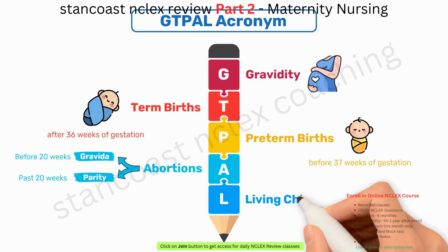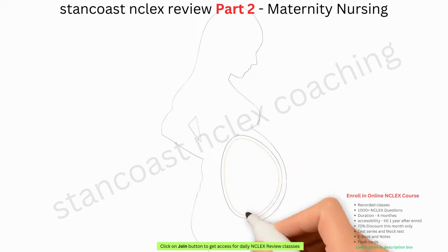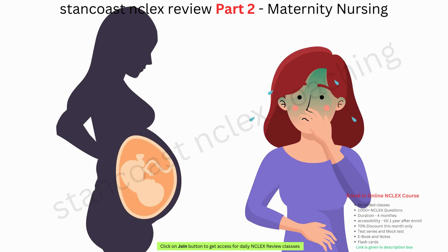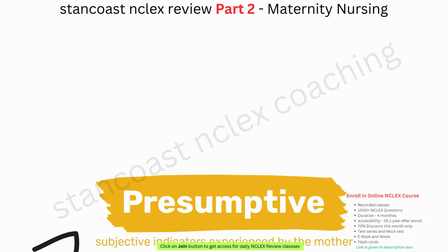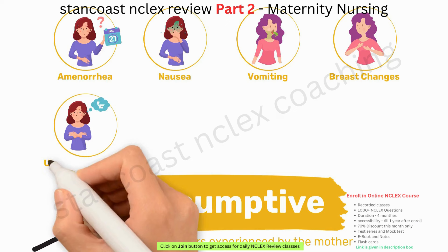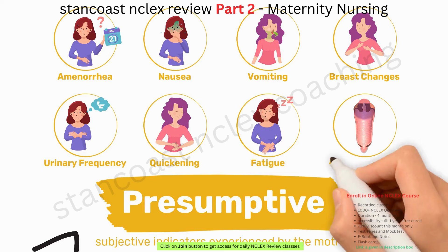Pregnancy is a transformative phase marked by a myriad of signs and symptoms characterized as presumptive, probable, and positive signs. Presumptive signs are subjective indicators experienced by the mother, including amenorrhea, nausea, vomiting, breast changes, urinary frequency, quickening (the first perception of fetal movement), fatigue, and alterations in vaginal mucosa color.